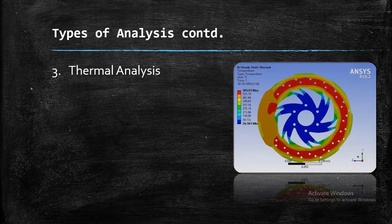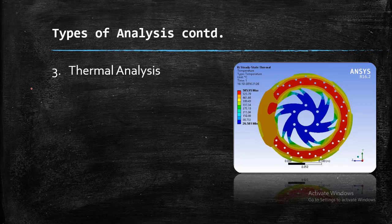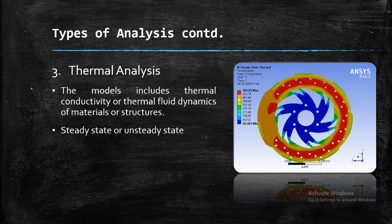Now moving on, thermal analysis is the next type of analysis. This picture is very much familiar to many people. This is a disc brake of a bike. The area which you can see in red, that particular area, the red area indicates the thermal stresses at that point are too high. So this area might get failed if the temperature goes on increasing, if the temperature exceeds its limit. So for that we need thermal analysis. The models which we use for thermal analysis, sometimes this includes thermal conductivity or sometimes they include thermal fluid dynamics of material or structure.